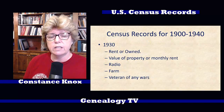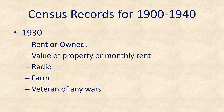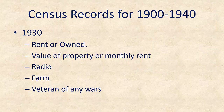Moving on to the 1930 census — they added information about whether they rent or own their home, the property value or monthly rent, whether they had a radio in the house, whether they're on a farm or not, and whether they're a veteran of any wars. That's some of the key information you can find in the 1930 census.